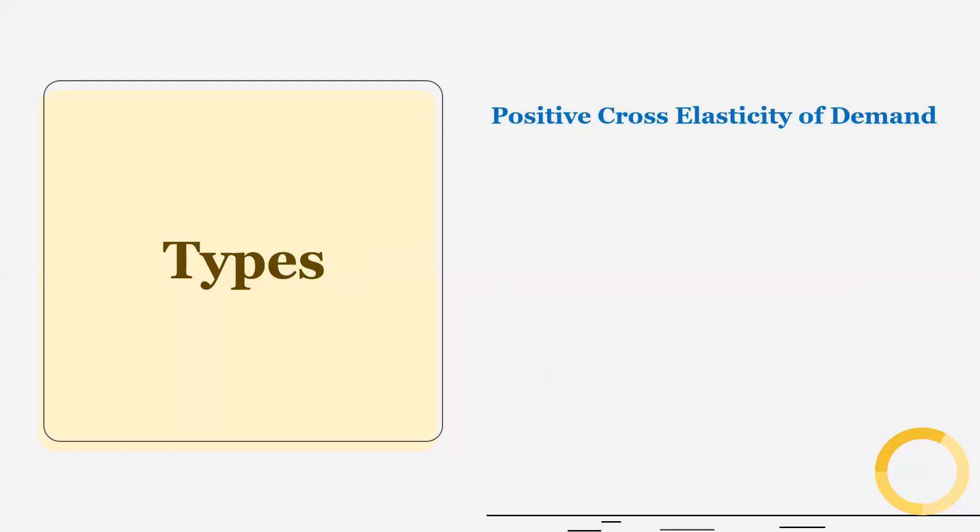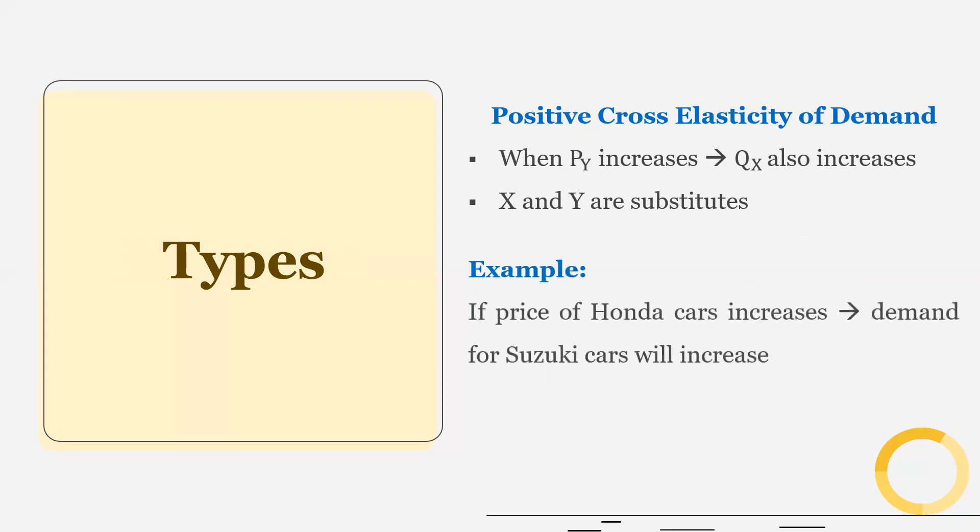Let's talk about positive cross elasticity of demand. So when price of Y increases, quantity of X also increases. So X and Y are substitutes. Take this example. If price of Honda cars increases, the demand for Suzuki cars will increase because consumers will substitute Suzuki cars for Honda cars. So here Honda and Suzuki cars are substitutes.